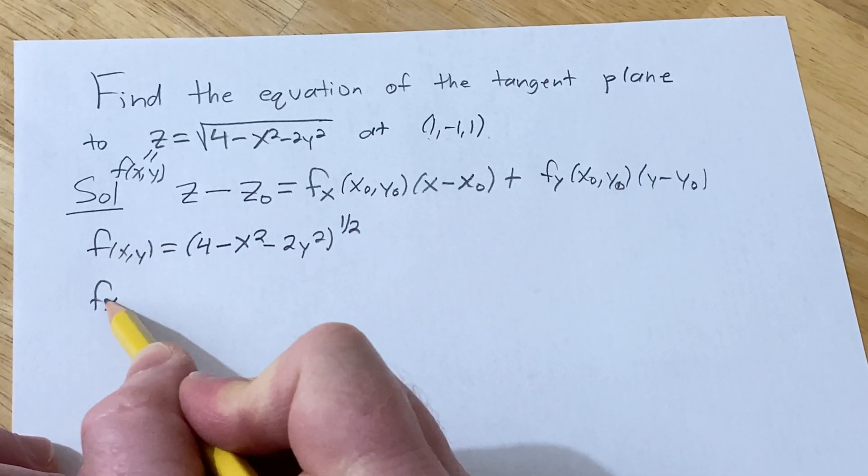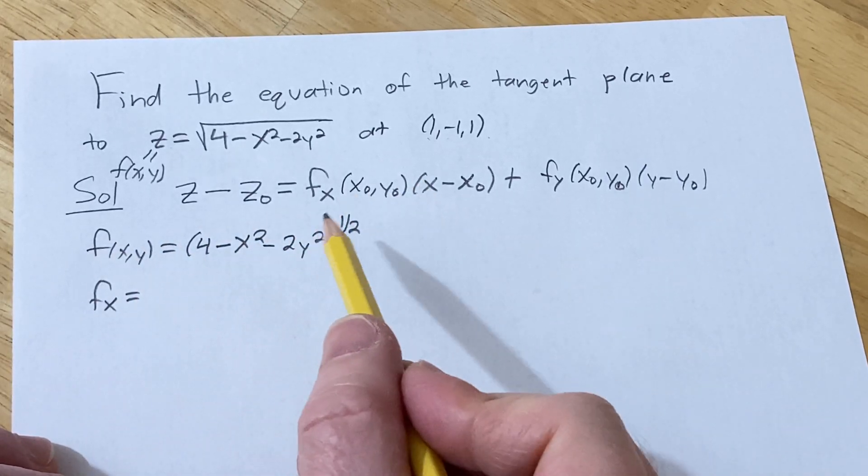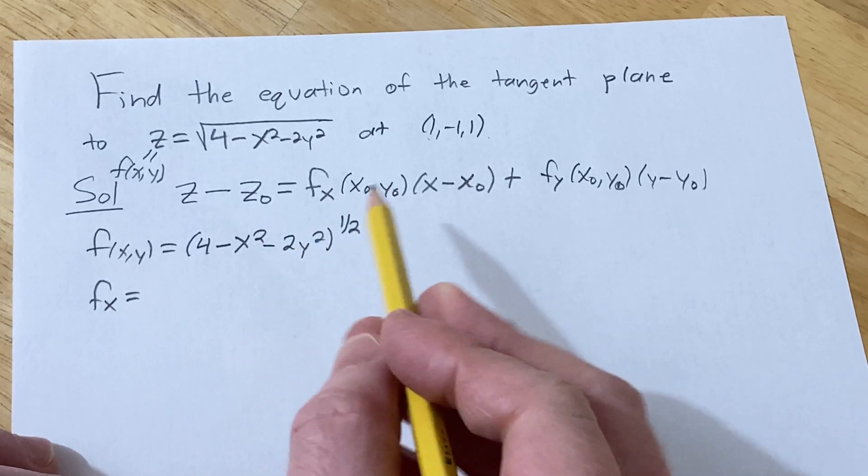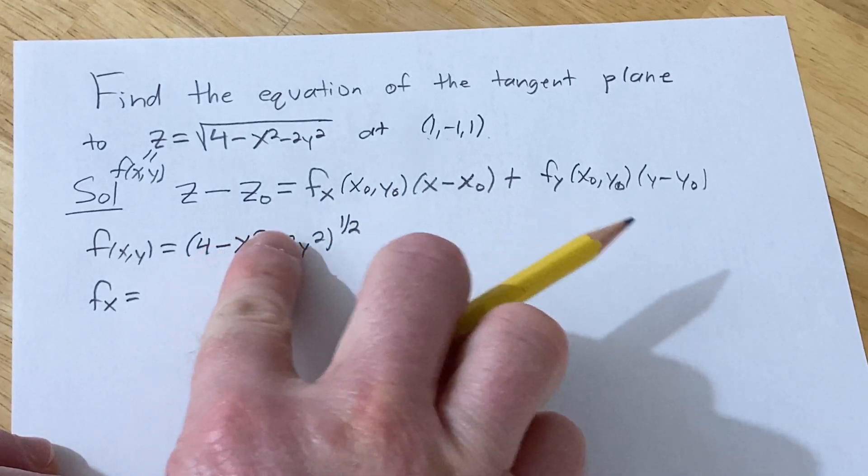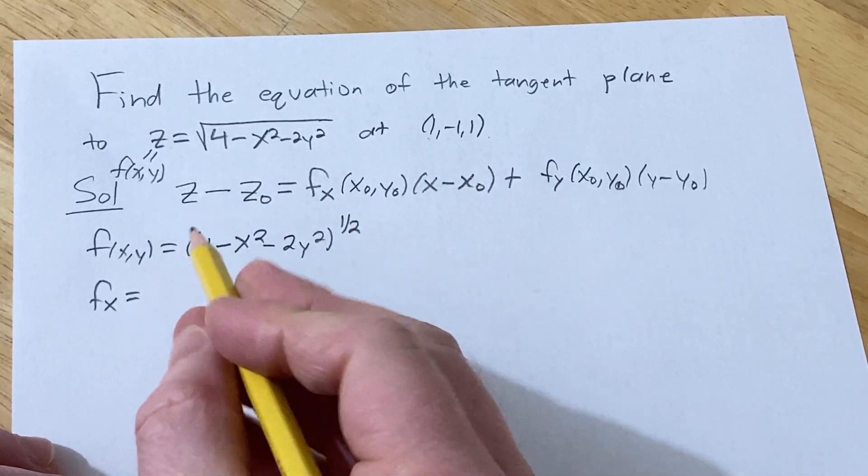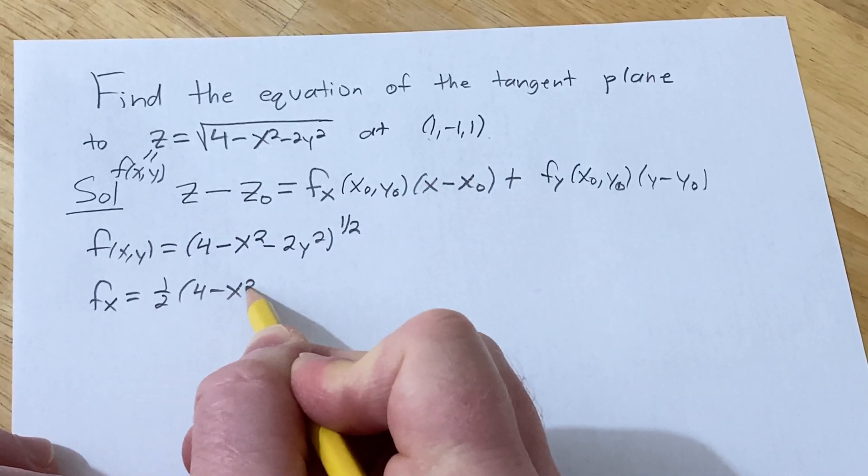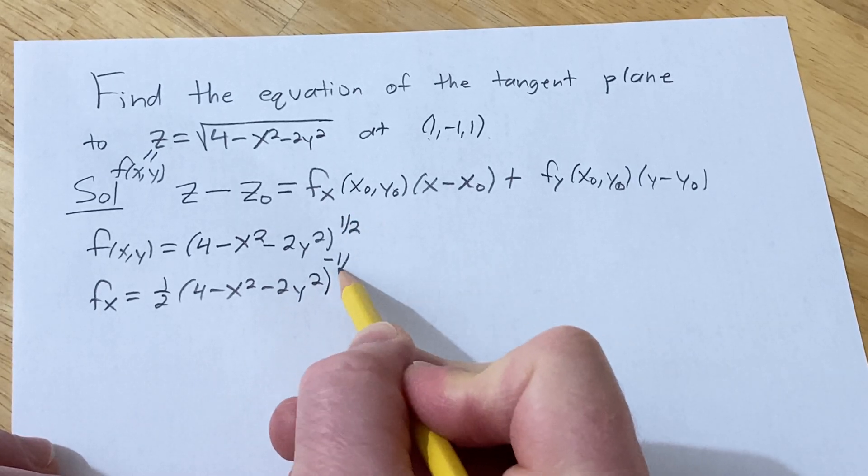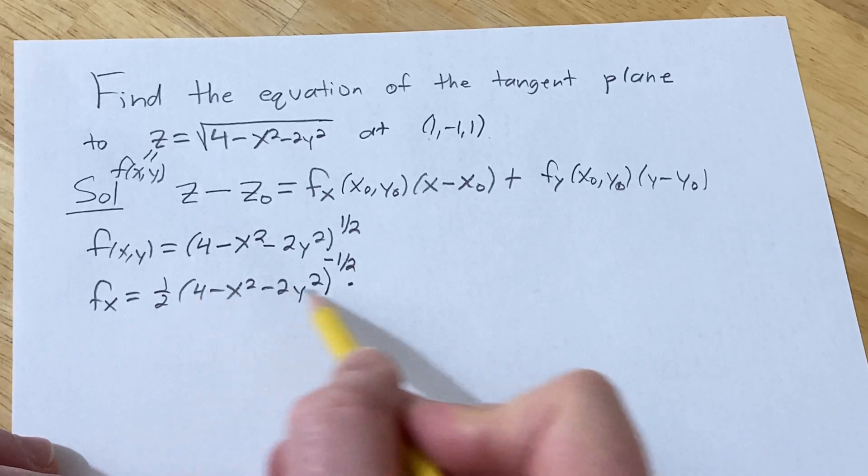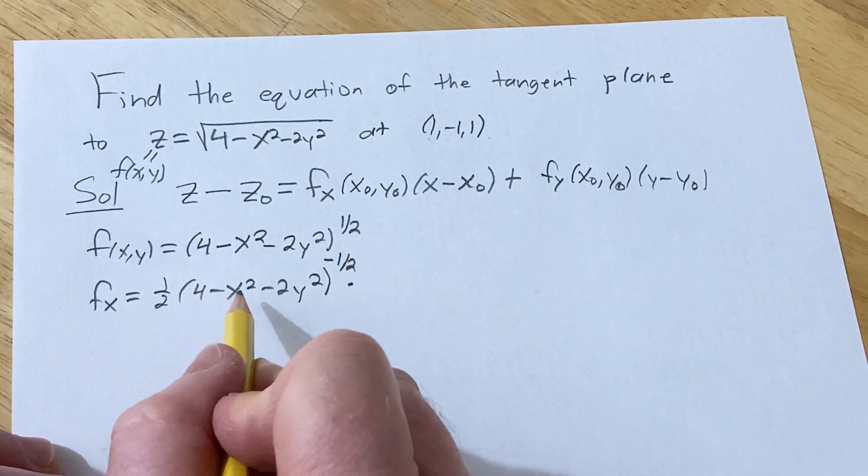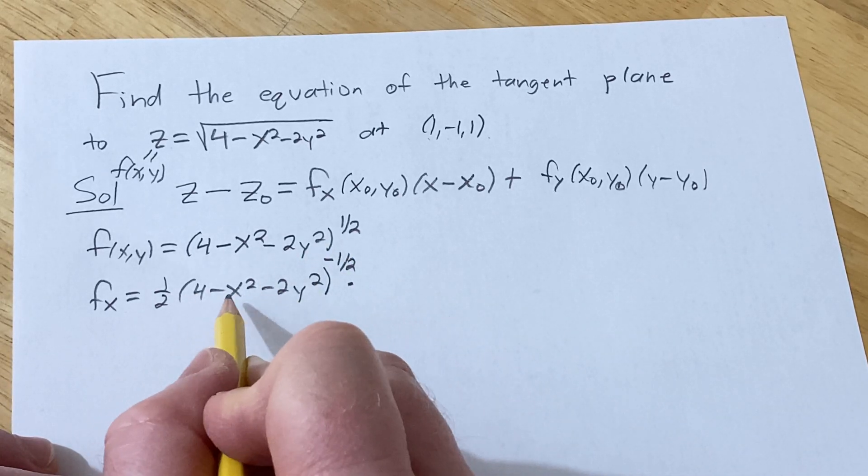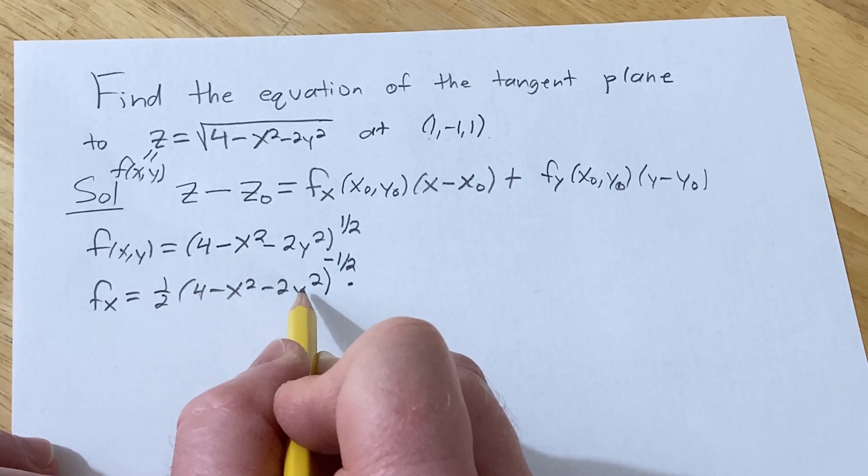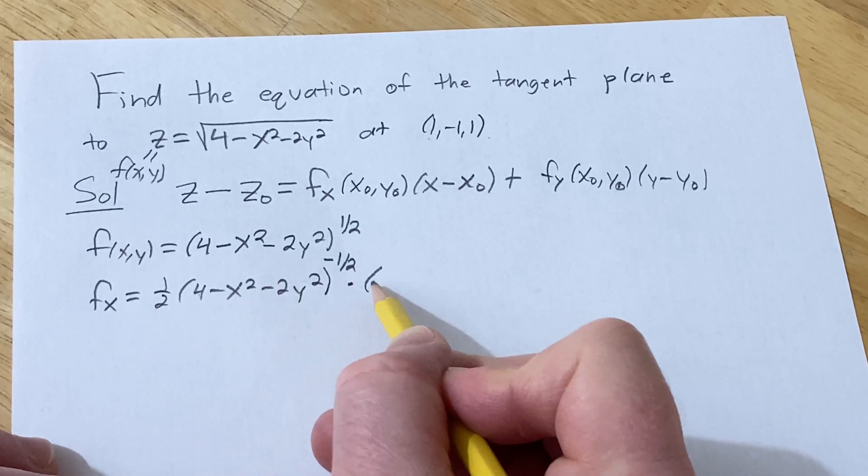So differentiating fx, recall that when you're computing partials, you treat all the other variables as constants. Here we're going to use the chain rule. This is our inside function, we'll bring down the one half, leave the inside untouched, subtract one from the exponent, and then times the derivative of the inside function. So the inside function here is this, so we're taking the derivative with respect to x. This is going to be 0, this derivative is 0 because there's the y here, so it's just going to be negative 2x.